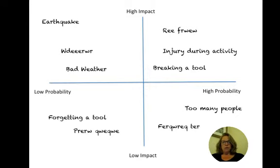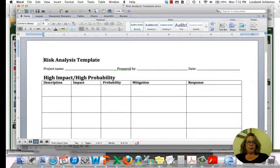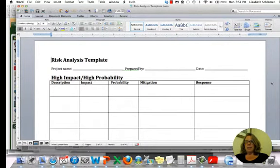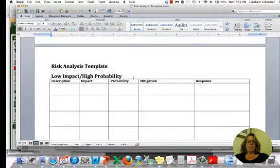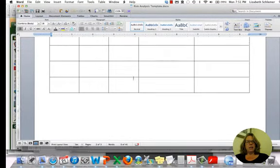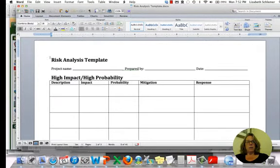And once you've done that, then what you'll end up doing is I'd like you to look at this template, which is on the PolyLearn site. And this template has three pages in it. It's divided up into high impact high probability, high impact low probability, and low impact high probability.